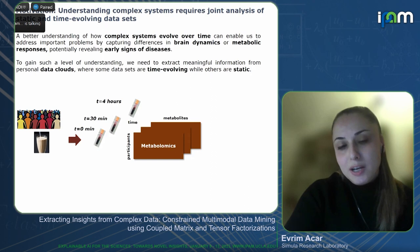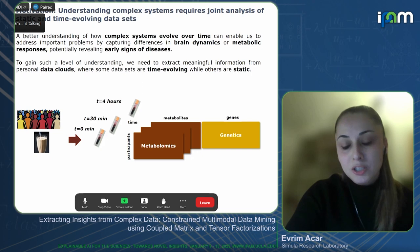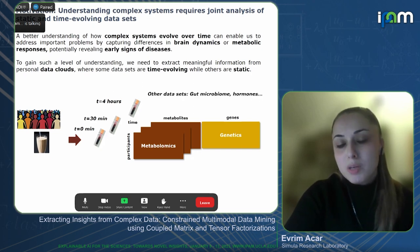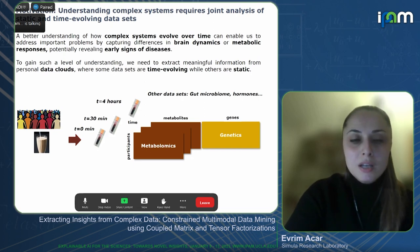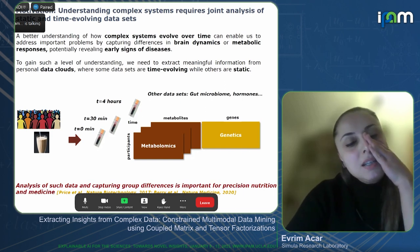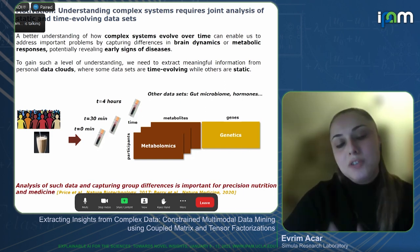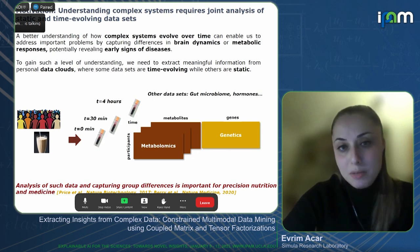In addition to the dynamic data, we often have additional sources of information such as gene expression data and gut microbiome data, which may also be relevant for understanding metabolic differences among individuals. Analysis of these data sets is important because if we have methods and tools to reveal stratifications of subjects, we can also use this information for precision nutrition and medicine.